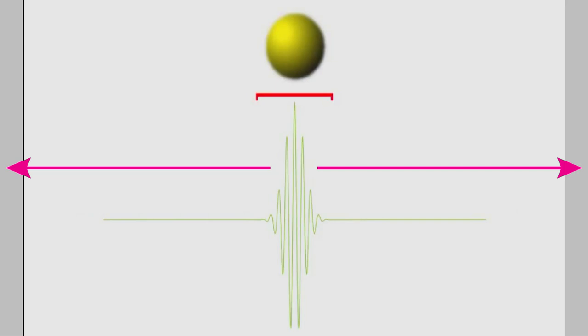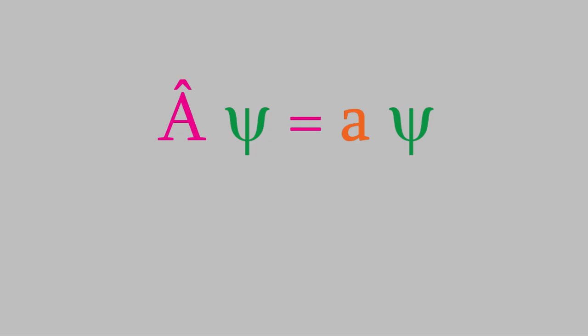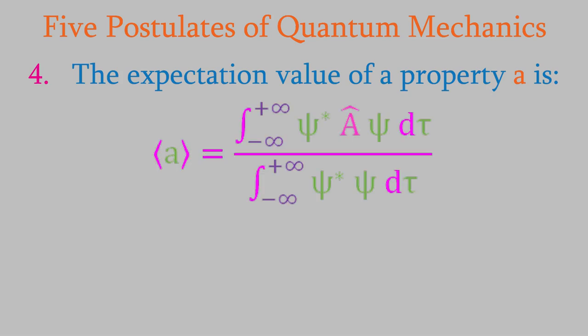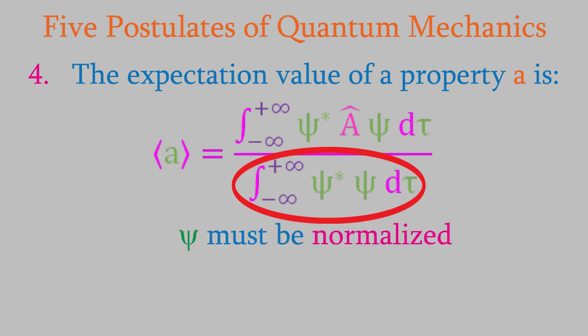This brings us to the fourth of the postulates of quantum mechanics. You might recall from video 4 that we can represent the act of taking a measurement on a system using this equation, where the eigenvalue a is the numerical value of our measurement. It'll often be the case that we want to predict the average value of a property we're measuring. In other words, we want to calculate the expectation value of a. The fourth postulate tells us that the expectation value of a is given by this fraction. This probably looks a little unfamiliar, but let's think about what it's actually telling us. You might recall from video 3 that this integral is equal to 1 if the wave function is normalized. We saw in video 3 that wave functions that describe realistic systems should be normalized, so the denominator is usually going to be equal to 1, and we can omit it from this fraction.